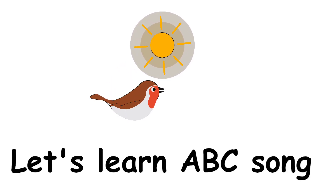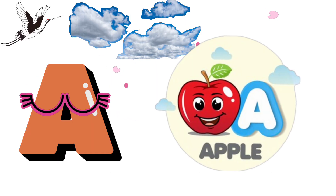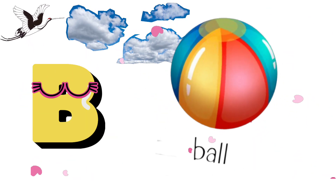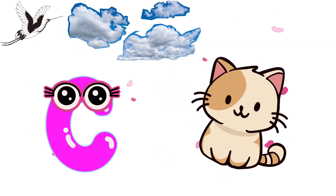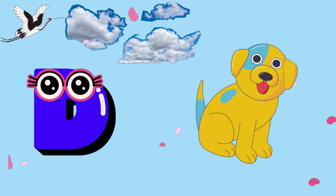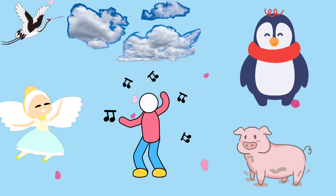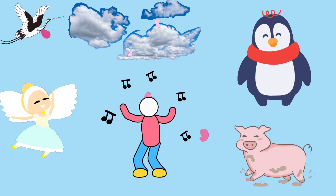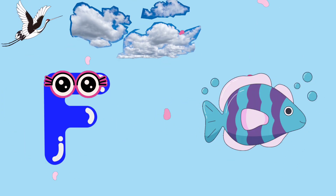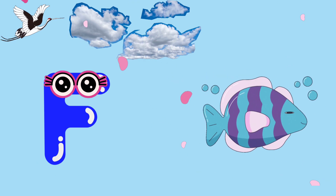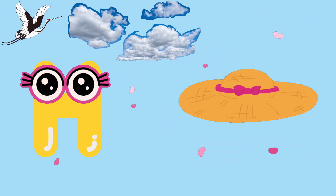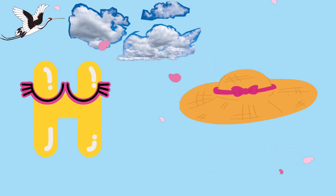Let's learn the ABC's song. F is for fish, fish. G is for gorilla, gorilla. H is for hat, hat hat hat.